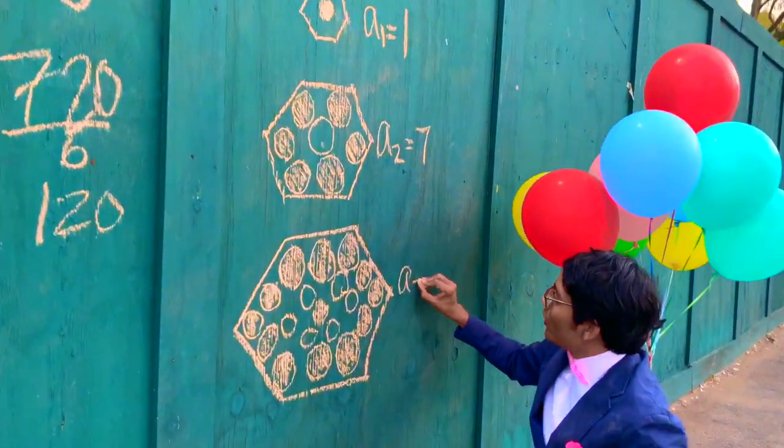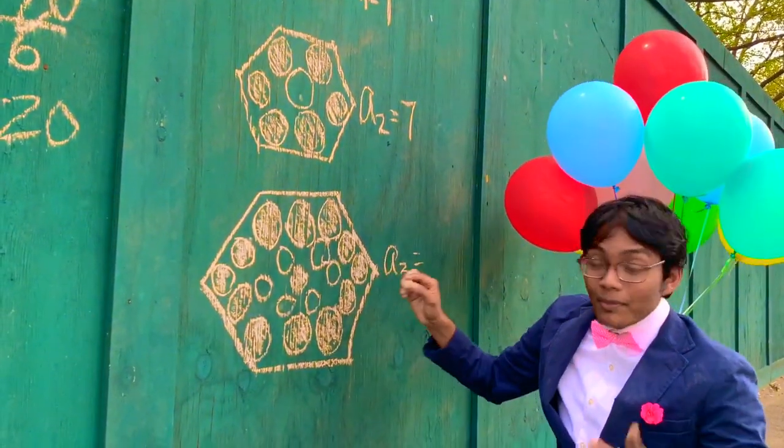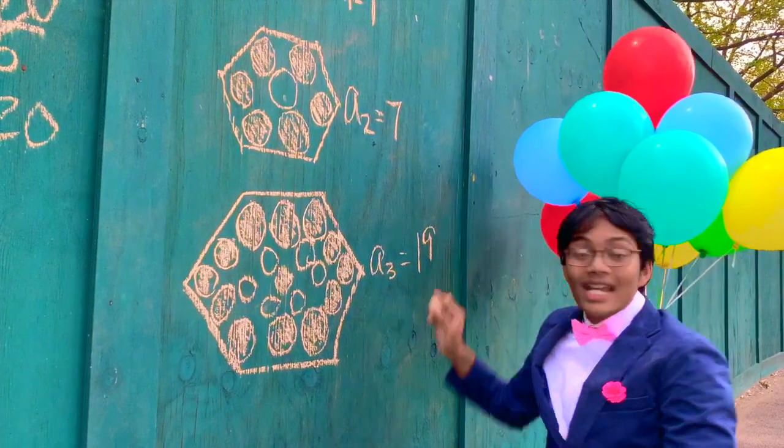The next term in our sequence a sub 3, the third term, if you count up the dots, you'll get 19 for a sub 3.